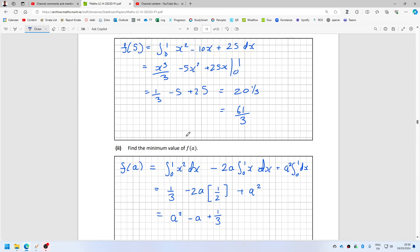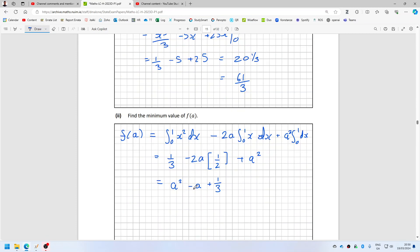I can check if that's right because f5 from this formula should give 61 over three. So five squared minus five plus one over three, 61 over three. So that's correct.